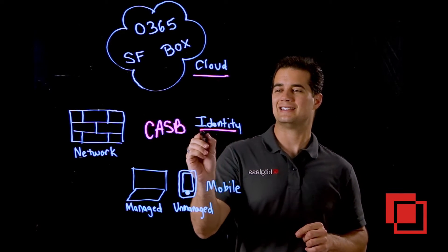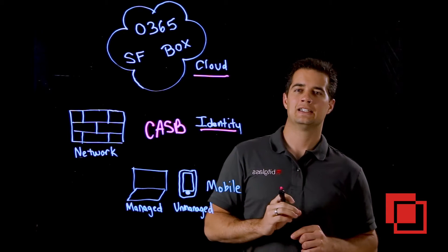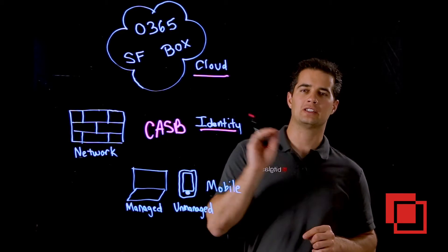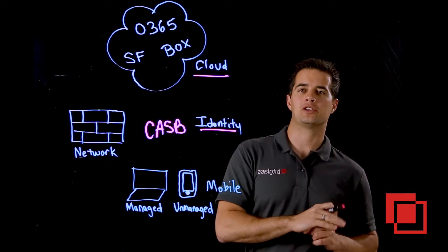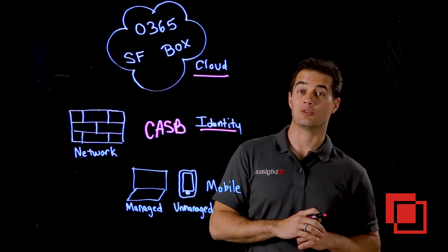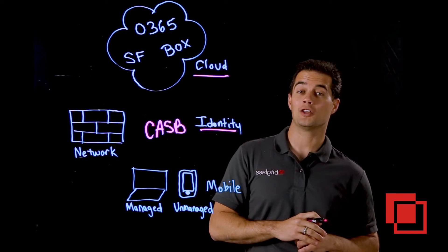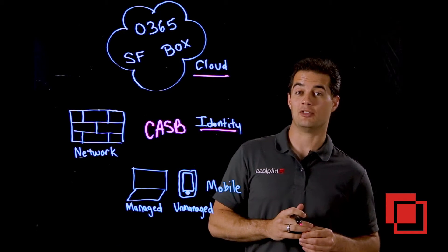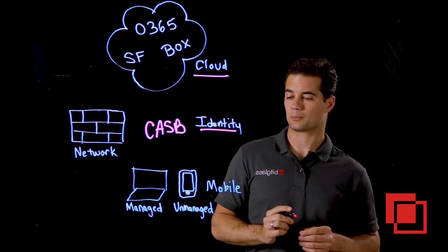The second piece is identity. Here a CASB will help you integrate your cloud apps with your premises-based identity infrastructure, and will also add things like multi-factor authentication and user behavior analytics.